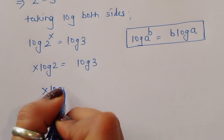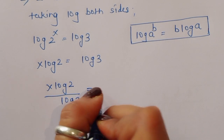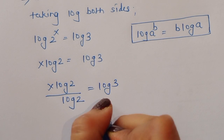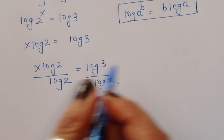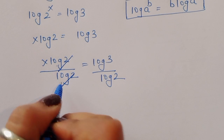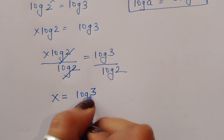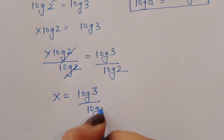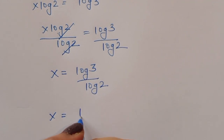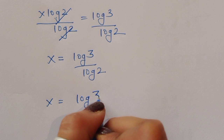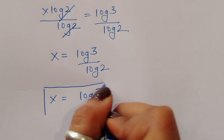Dividing both sides by log(2): x = log(3) / log(2). This can be written as x = log₂(3). This is the value of x.